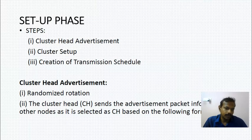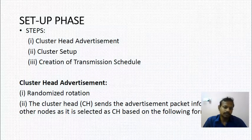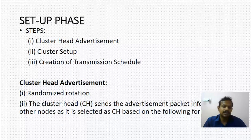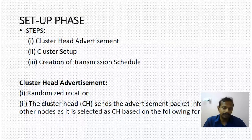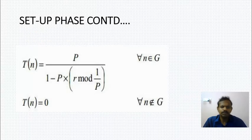In the first sub-phase, cluster head advertisement follows a randomized rotation so every cluster member gets an equal opportunity of becoming a cluster head. A cluster head sends an advertisement packet to other nodes indicating it has been selected as a cluster head, based on a threshold formula T(n).